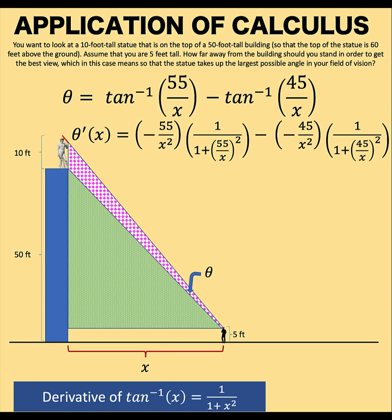So let's find theta prime of x. That is equal to the derivative of this first term minus the derivative of the second term. Now, inverse tangent of 55 over x is a composite function composed of the inverse tangent function as our outer function and 55 over x as our inner function. And therefore, we are going to use the chain rule of differentiation.